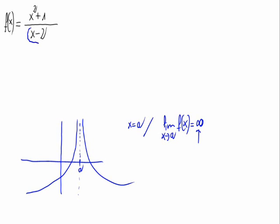It's as simple as making the denominator equals 0. So x minus 2 equals 0, which means x equals 2.